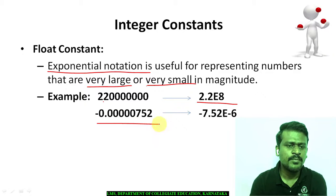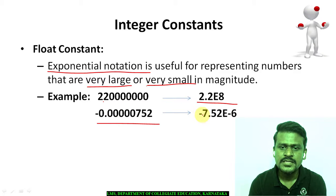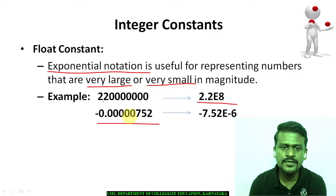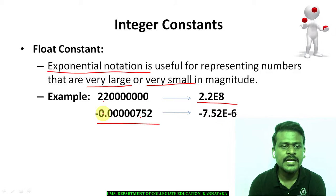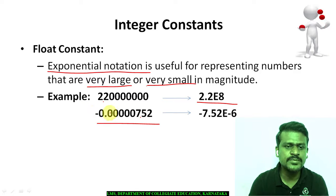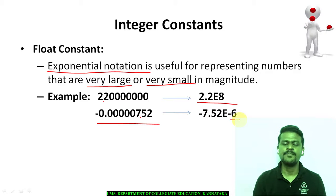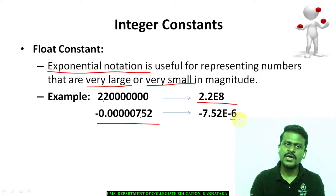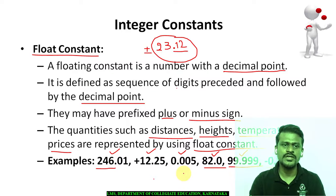We can also take small values — for example, -0.0000752. This number can also be represented as -7.52e-6, counting 1, 2, 3, 4, 5, 6 places. So -7.52e-6 is a negative value. As it is a negative value and a small number, the decimal part is also a negative value. This is how you can represent any float value using exponent values or normal floating point values with a decimal point. This is all about floating point constants.